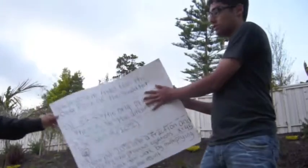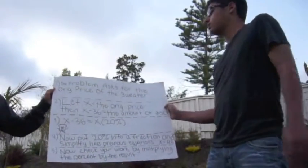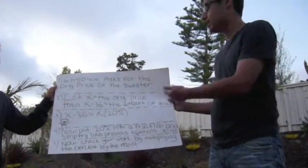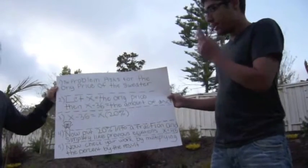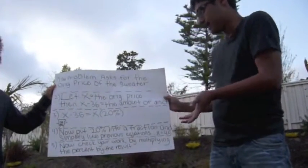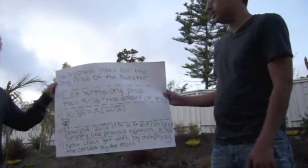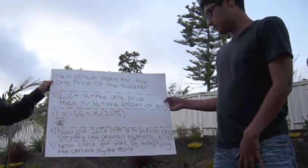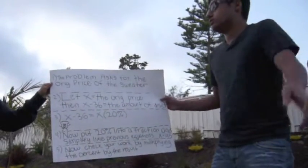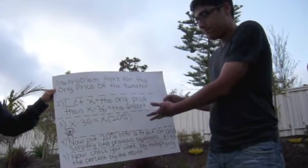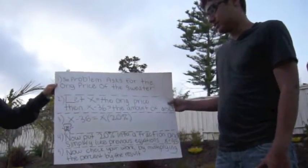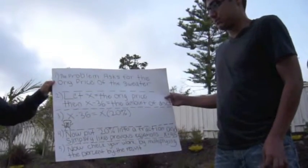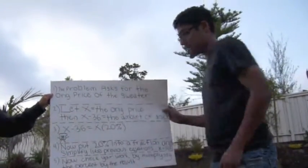Alright, the problem asks for the original price of the sweater. So let X be the original price. Then X minus 36 equals the amount of the discount. Third step: X minus 36 equals X times 20%.